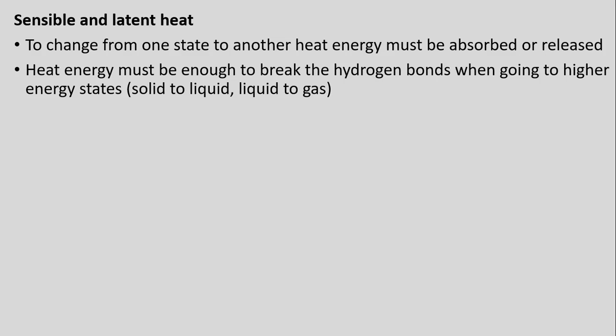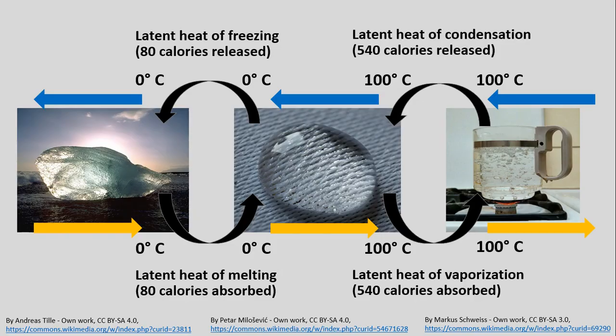Focusing on sensible and latent heat with water: to change water from one state to another, heat must either be absorbed or released. With latent heat, there must be enough energy to break the hydrogen bonds, especially when going to higher energy states — from ice to water, or from water to water vapor. Water is H₂O — two hydrogen atoms and one oxygen atom. Generally, it takes one calorie of energy to increase any form of water by one degree Celsius.